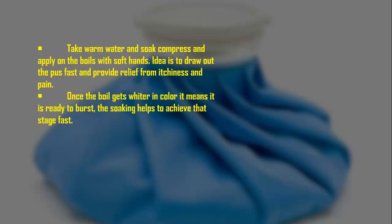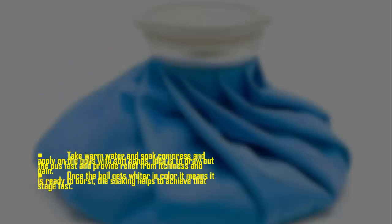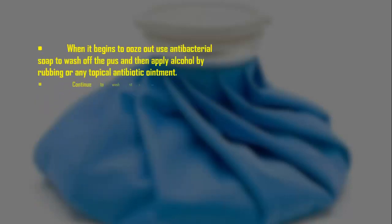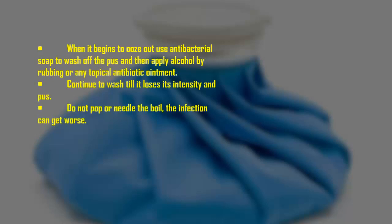Once the boil gets whiter in color, it means it is ready to burst. The soaking helps to achieve that stage fast. When it begins to release pus, use antibacterial soap to wash off the pus and then apply rubbing alcohol or any topical antibiotic ointment. Continue to wash until it loses its intensity. Do not pop or needle the boil, as the infection can get worse.